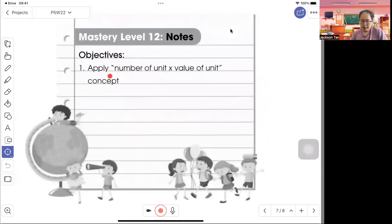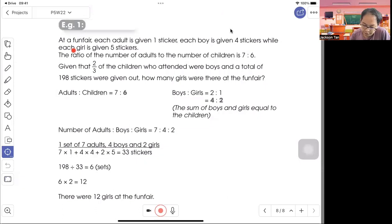Mastery Level 12, apply number of units and value of unit concept. At a fun fair, each adult is given 1 sticker, each boy is given 4 stickers, while each girl is given 5 stickers. The ratio of the number of adults to the number of children is 7 to 6. So here 7 to 6, get the ratio.